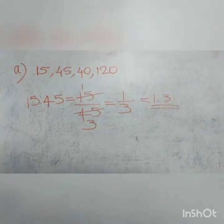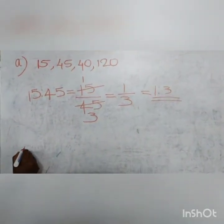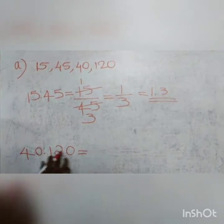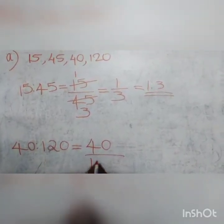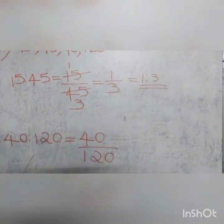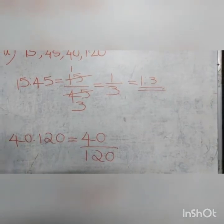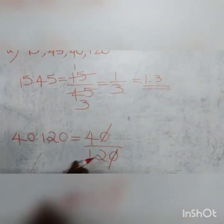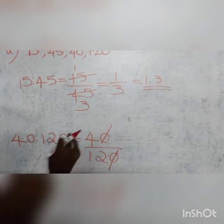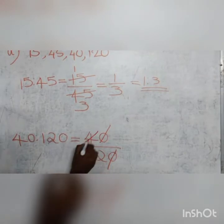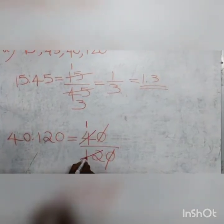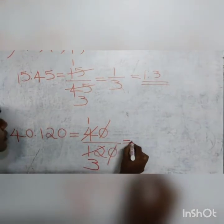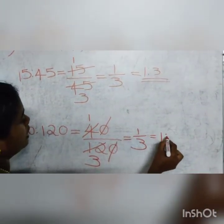Next, we find the ratio of 40 and 120. Write 40 is to 120, that is equal to 40 by 120. Now we convert this fraction into its simplest form. First cancel both zeros from numerator and denominator. Since both 4 and 12 are multiples of 4, we divide both numerator and denominator by 4. Since 1 times 4 is 4, we write 1 here. And since 3 times 4 is 12, we write 3 here. Hence the fraction becomes 1 by 3, and hence the ratio is 1 is to 3.